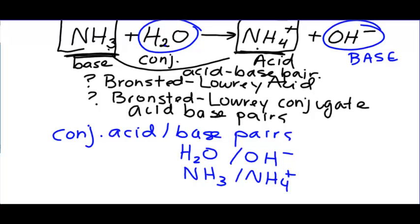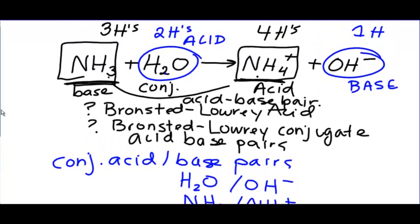So another conjugate acid-base pair is H2O and OH-. You also have the NH3 with the NH4+. So we partner them up to find out what the conjugate acid-base pairs are. The one with the more hydrogens is the acid. The one with less hydrogens is the base. And notice, on the left side of the arrow, you have a base and an acid. And on the right side of the arrow, that would be your conjugate. We have the conjugate acid and the conjugate base, but a base and an acid. You will always only have one acid and base on the left and one acid and base on the right. If you do this and you get two bases on the left, you made a mistake.